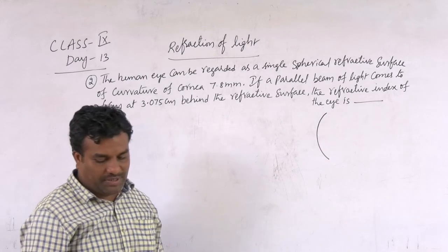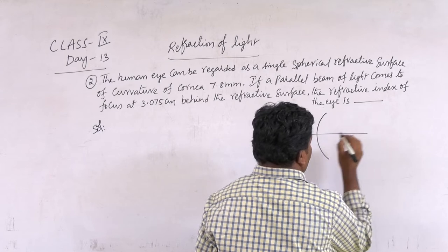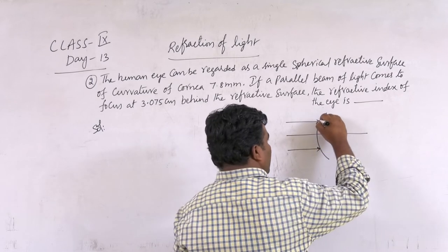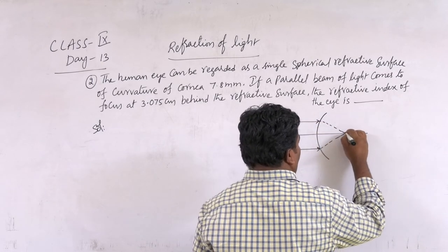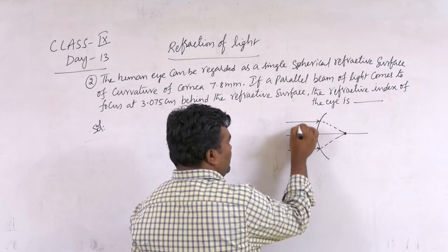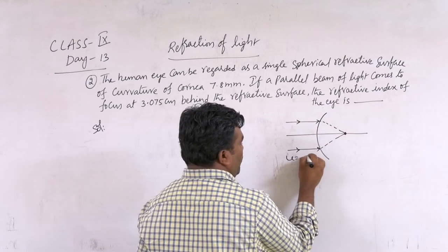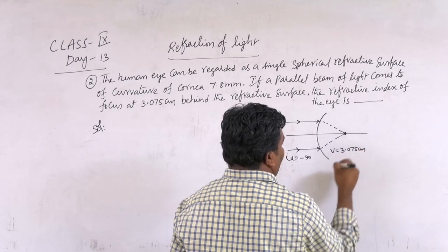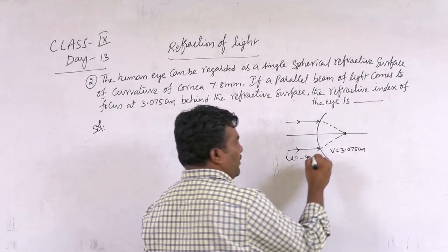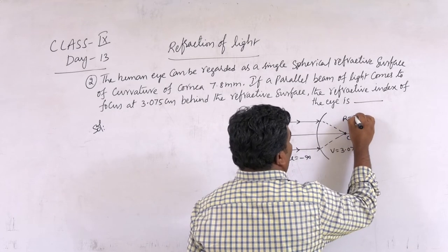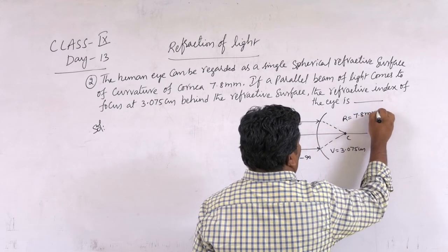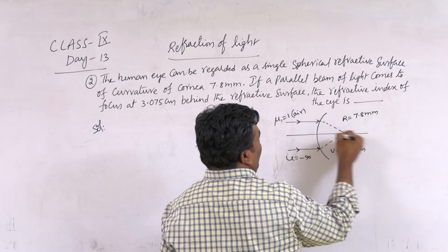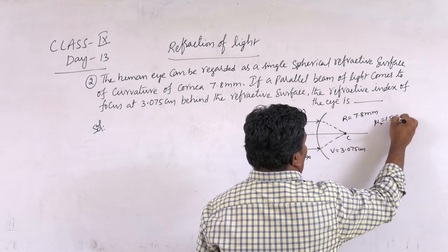This is the refractive surface, this is the principal axis. A parallel beam falls on cornea, and these rays meet at a single point. It is a parallel beam, so U = −infinity. V = 3.075 cm. Radius of curvature R = 7.8 mm. So μ1 = 1 (air). μ2 is unknown — we call it μ.